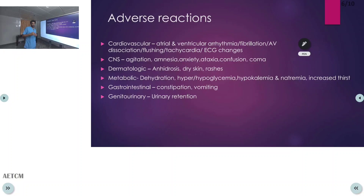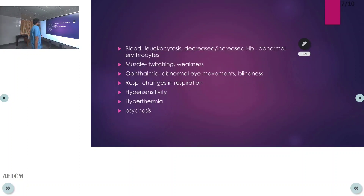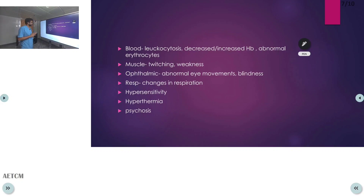In the gastrointestinal and genitourinary systems, atropine causes decreased secretion and motility leading to constipation, vomiting, and urinary retention. In blood parameters, leukocytosis, abnormal hemoglobin levels, and abnormal erythrocytes can be seen. In muscle, twitching and weakness may occur. In ophthalmic cases, abnormal eye movements and blindness have been reported.